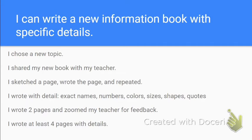Today's main thing is to write with detail. We're going to talk about how to write with exact names, numbers, colors, sizes, shapes, quotes, and more. At the end, you will need to write two pages in your book and Zoom your teacher for feedback.